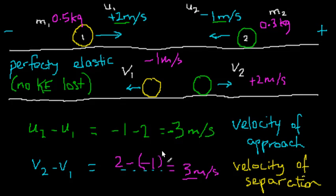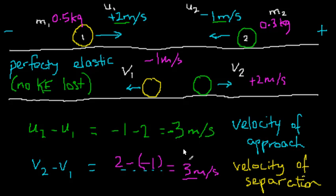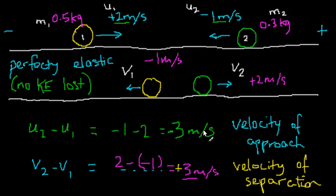As a final note, notice that the velocity of approach — u2 minus u1 — gives minus three, while the velocity of separation — v2 minus v1 — gives plus three. They have opposite signs.